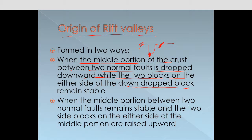In the second way, the middle portion between the two normal faults remains stable, while the other portions on either side are lifted upward. So then this area becomes a Rift Valley. This upward movement of the surrounding landmass also causes Rift Valley formation.